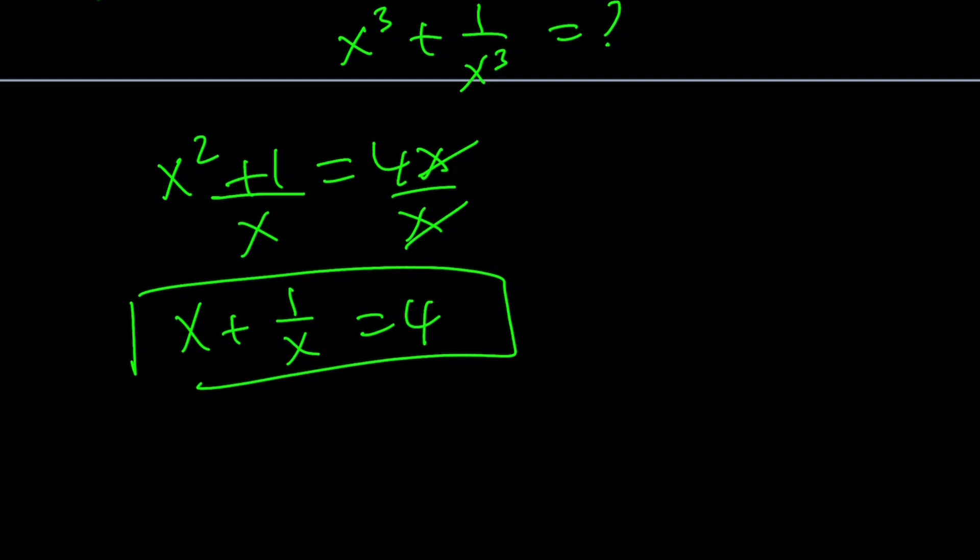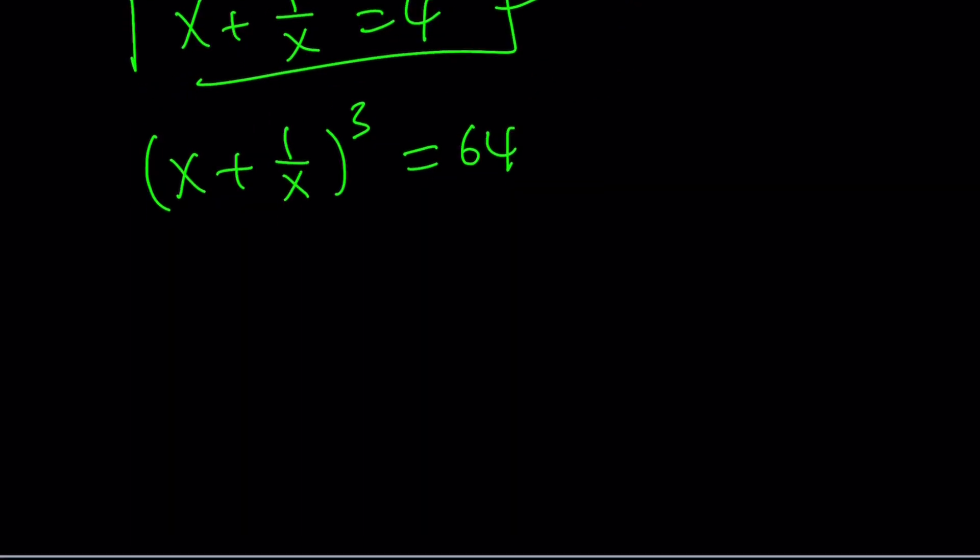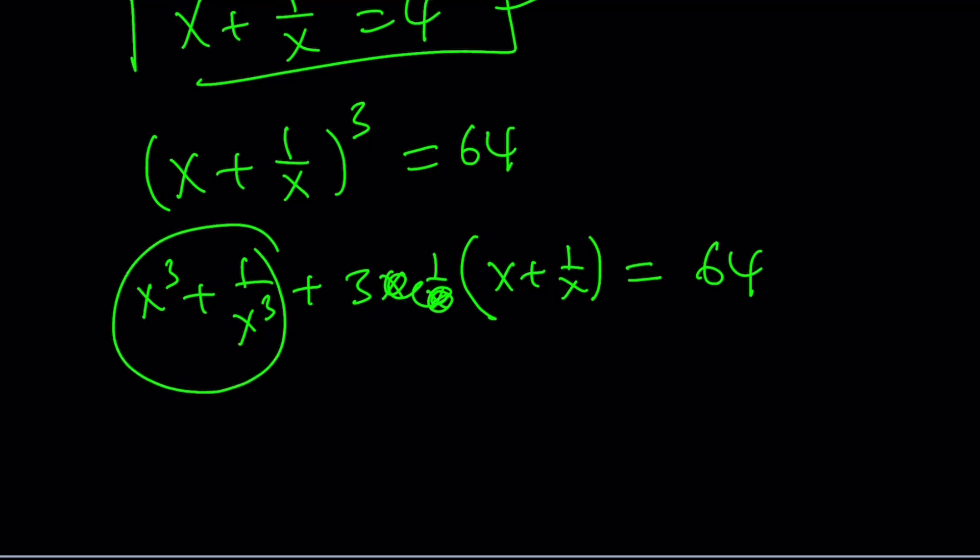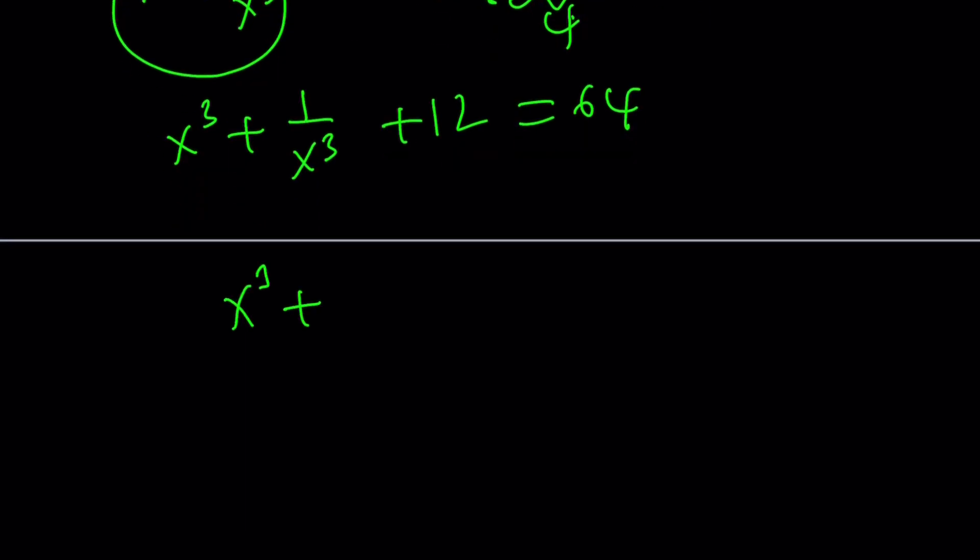Now, we know this, and our goal is to find the sum of cubes. So we're just going to go ahead and cube this expression. If you cube it, we're going to get 64. And if you expand it, you're going to get a cubed plus b cubed plus 3ab times a plus b. That's the formula I use usually for cube of a sum, equals 64. These two cancel out, and by the way, this is 4. 3 times 4 is 12. So x cubed plus 1 over x cubed plus 12 equals 64. And finally, x cubed plus 1 over x cubed becomes 52 as before.